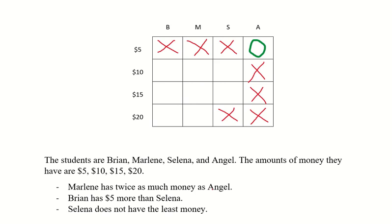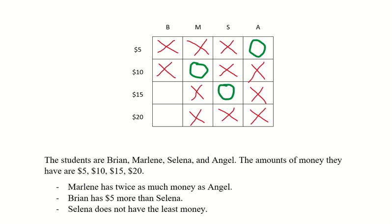For example, Clue 1 says Marlene has twice as much money as Angel. Now we know Angel has five dollars. So if Marlene has twice as much, that's twice five — ten. Marlene has ten dollars. That means she can't have any other amount, and nobody else can have ten, so Brian can't have ten and Selena can't have ten. At this point there's only one spot left for Selena: fifteen dollars. And that means Brian can't have fifteen, so there's only one spot left for Brian: twenty dollars.